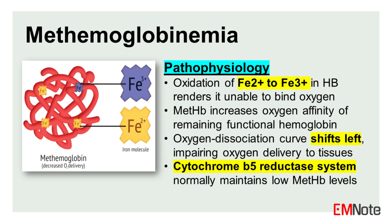Pathophysiology: Methemoglobin is a form of hemoglobin in which the iron in the heme group has been oxidized from the ferrous state, Fe2+, to the ferric state, Fe3+.